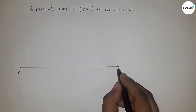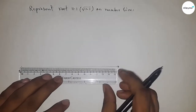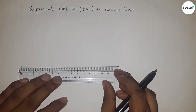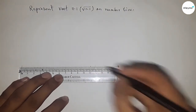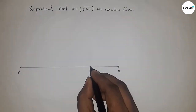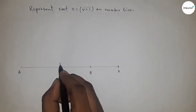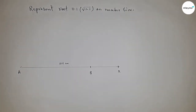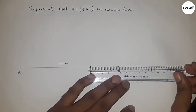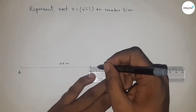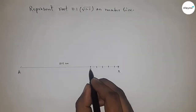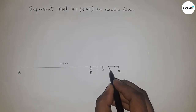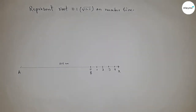First, draw a line of any length — this is our AX line. Next, take a length of 11.1 centimeters using a scale. This is 11.1 centimeters. Mark point B, so AB equals 11.1 centimeters. Now mark the numbers on the line — 0, 1, 2, 3, 4, and so on — and mark point C here.